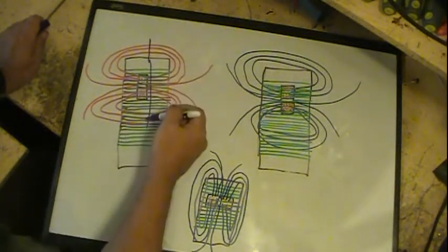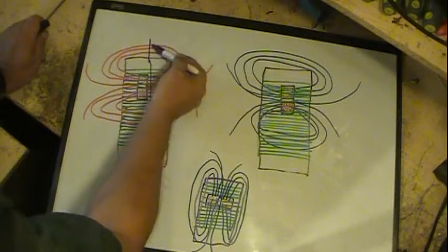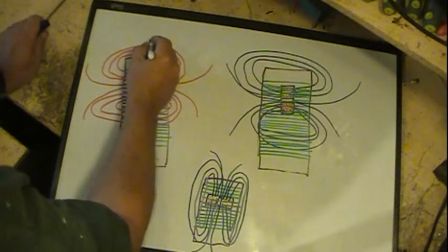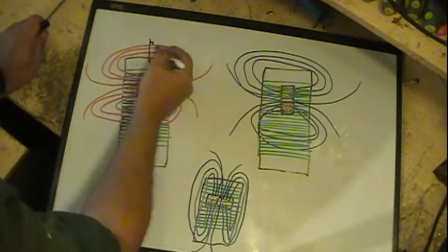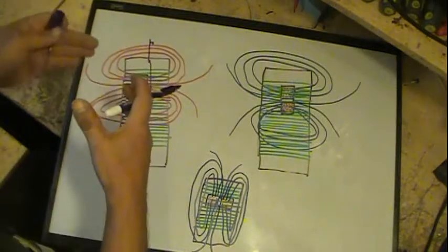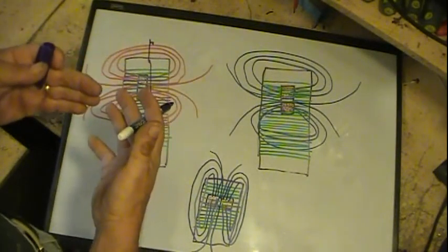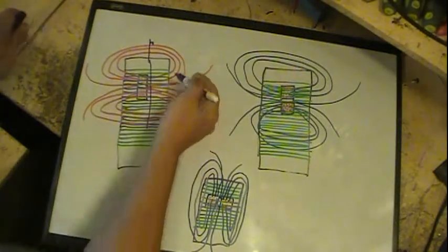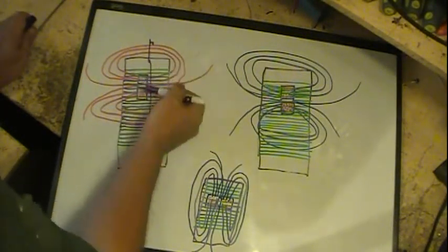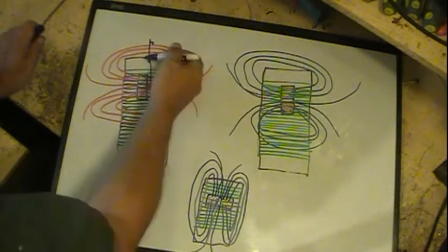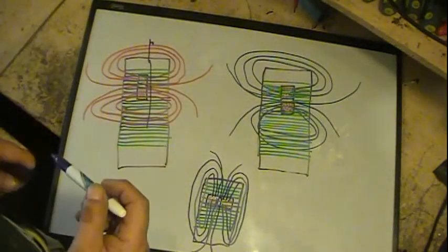If the wires ran this way, they're getting 90 degrees cut across. As that expands and contracts, more lines of flux will cross more wire, a longer length of wire, and create a greater current.